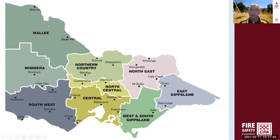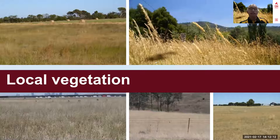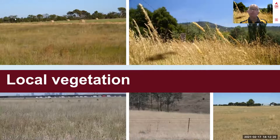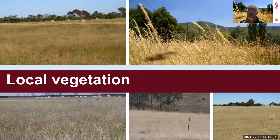The main statement here is that like every season, there is a need to be prepared for a fire that could happen due to this high fuel load. When we talk about local vegetation, there's an increased amount of grass. The chat question is: what type of landscape do you think you have in your area, and why does it matter?